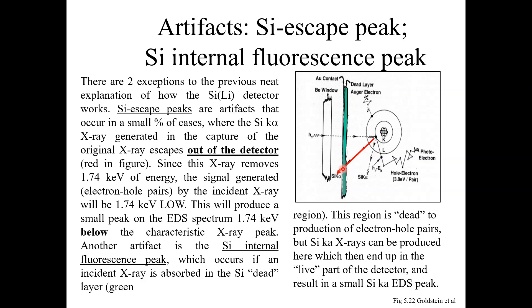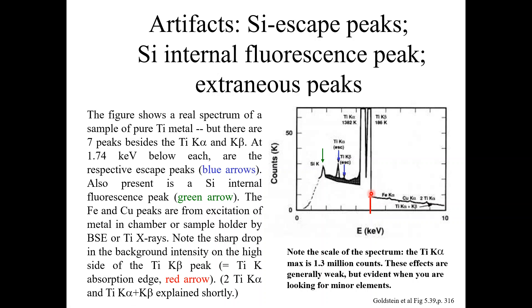Here you can see a real EDS spectrum of a titanium metal sample. Besides the titanium K-alpha and titanium K-beta peaks, there are seven additional peaks. The escape peaks — shown with blue arrows — appear at 1.74 keV below each respective titanium peak. Also present is the silicon internal fluorescence peak, shown here with a green arrow.